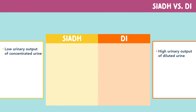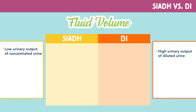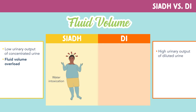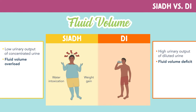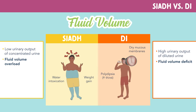Next, let's look at volume in the body. In SIADH, we'll see fluid volume overload, which leads to water intoxication and weight gain. In DI, we see fluid volume deficit, which leads to polydipsia or an increase in thirst, dry mucous membranes, and a decrease in skin turgor.